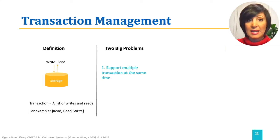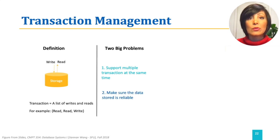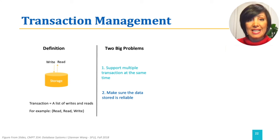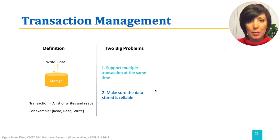The second challenge is making sure the data stored is reliable. Whether a crash, a temporary loss of electricity, or failure of a system happens, we want to ensure our database holds a record once it is committed. Note that these two problems arise from the challenge in maintaining ACID properties.